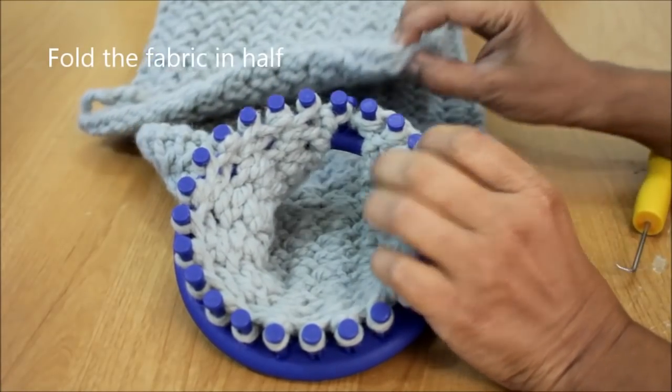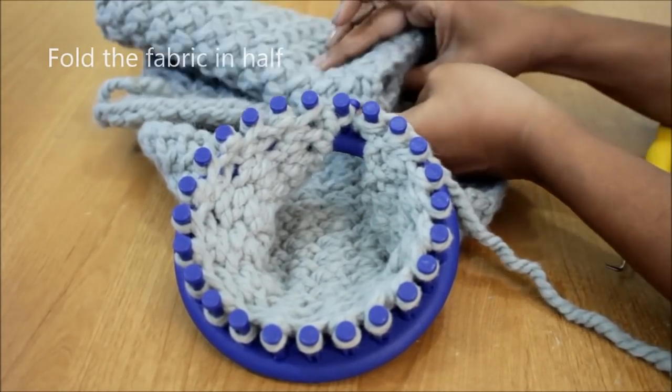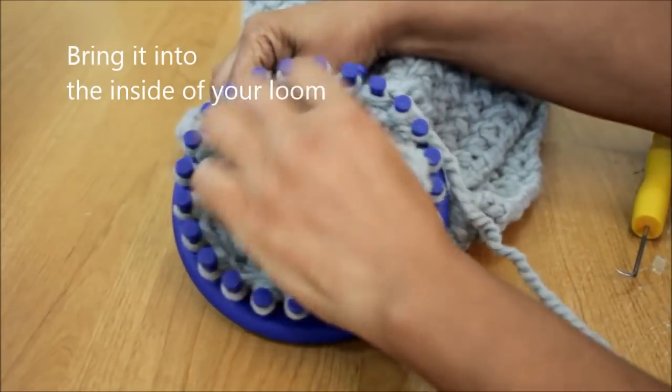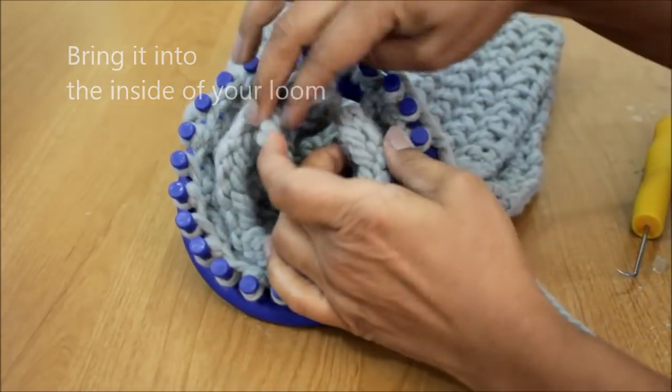When you finish your rows, then it's time to connect the two sides. You're going to fold your fabric in half like this. And then you're going to take that cast on edge and bring it into your loom on the inside.